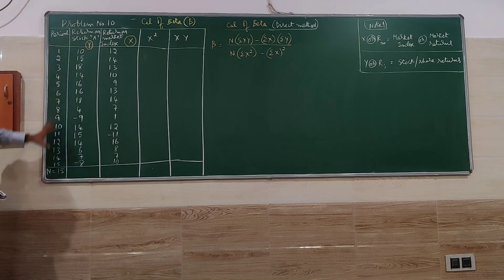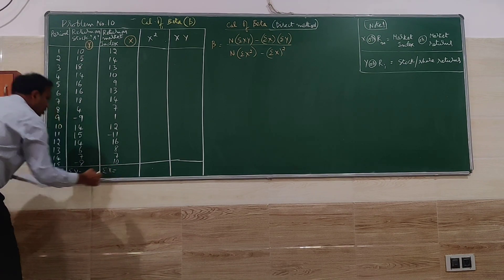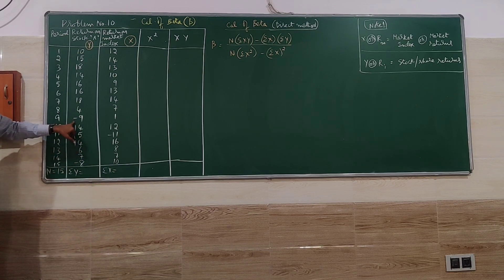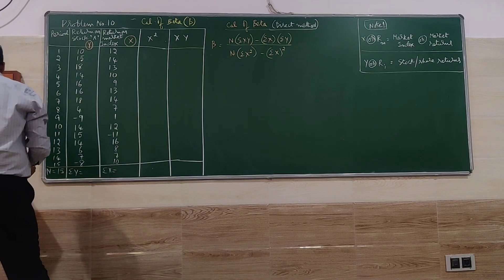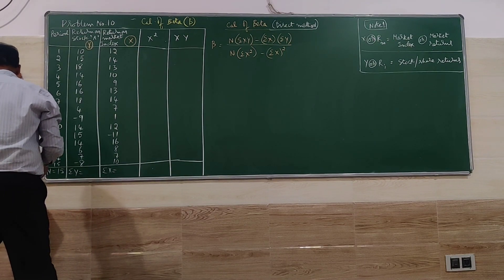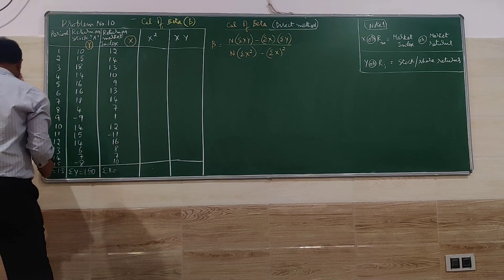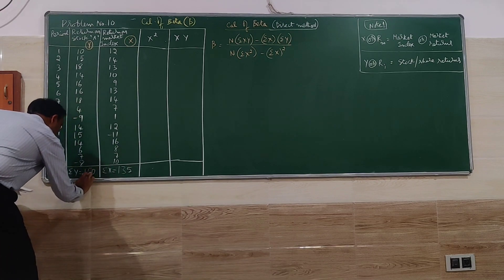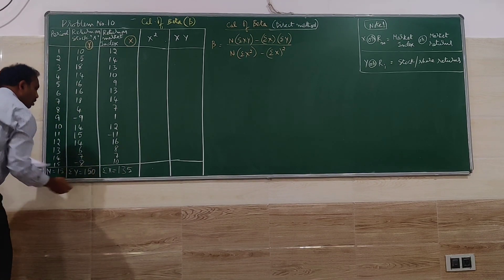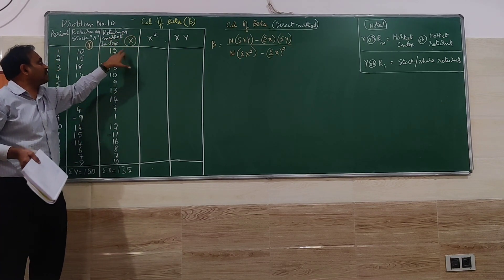N is equal to 15 — the total number of items. I will go for the total of Y and the total of X. For the X column total and Y column total, minus values are there — you have to add all the plus values and then subtract the minus values. The total of the Y series is 150 and the total of the X series is 135. After finding the totals of the two columns, we have to go for X squared and X into Y.